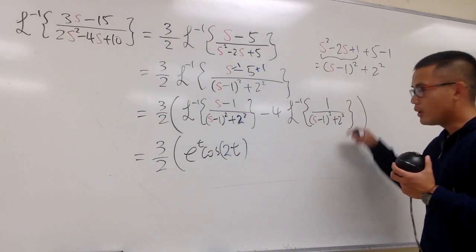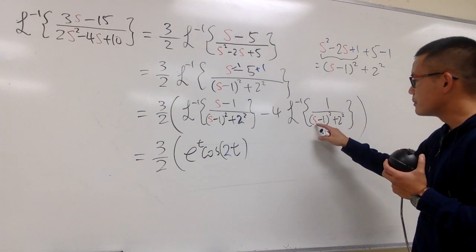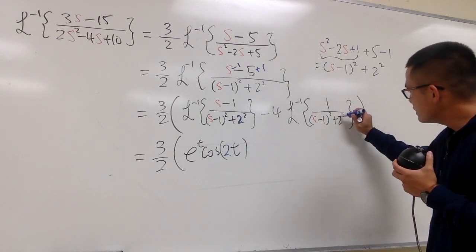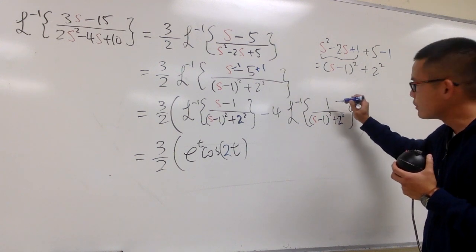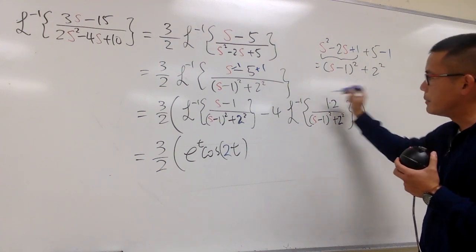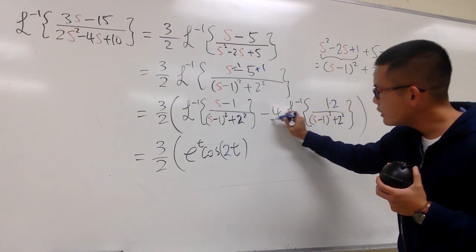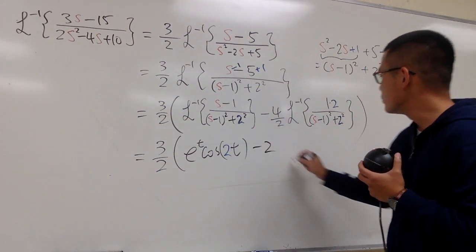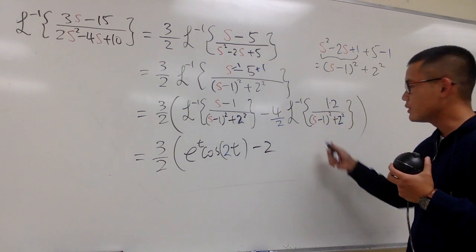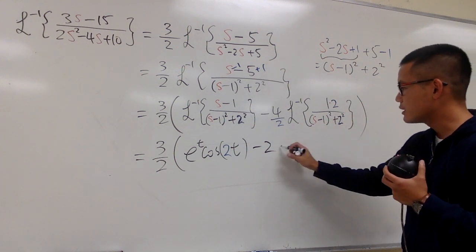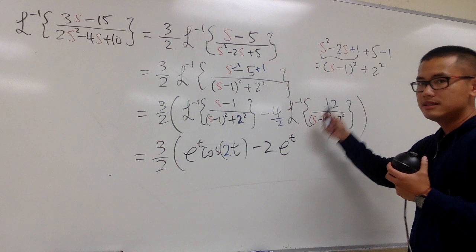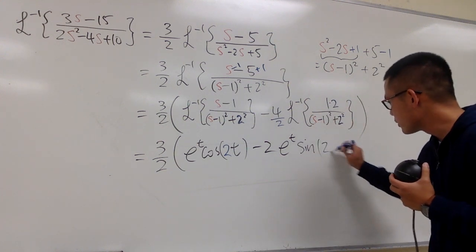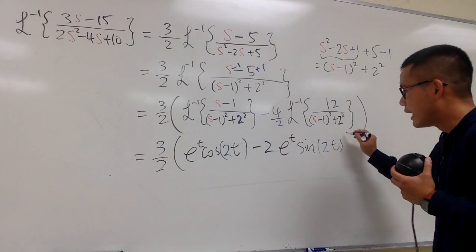But right here, you know on the top it's just a 1, and on the bottom here we have the s minus 1. Well, I must have this 2 on the top as well, so we'll have to go ahead and multiply by 2. But be sure you go ahead and divide the 2 right here. So, negative 4 over 2 is just minus 2, and then this is going to give us, we have the s minus 1 here, so that's e to the t, and this is the sine part. So we have sine of 2t, so let's put our 2 right here, and then t.